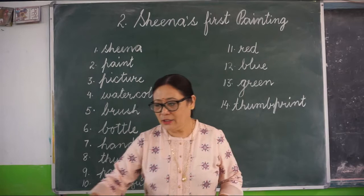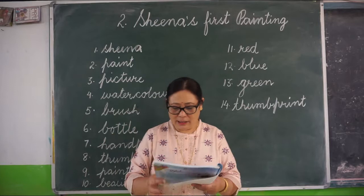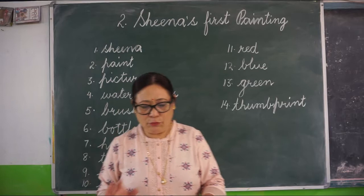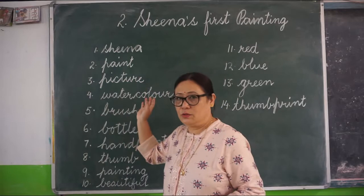Here there are different types of painting — this is oil painting. Children, please see page number 15, English 2 book, page number 15 — Sheena's first painting. And today we are going to learn only the difficult words. I have written some words here on the board. Let us learn these words.